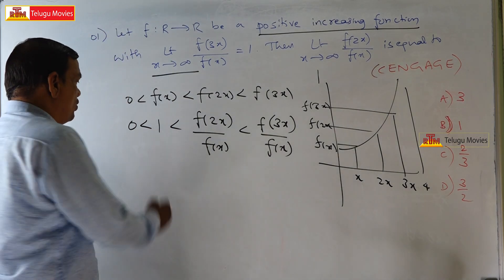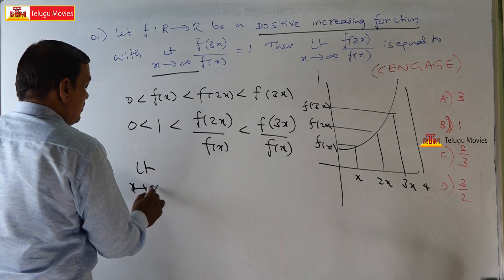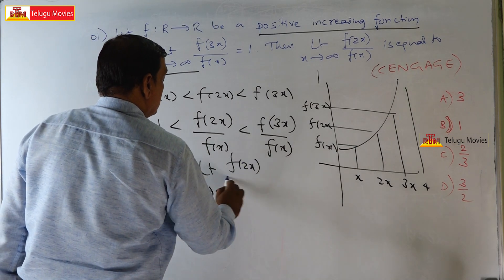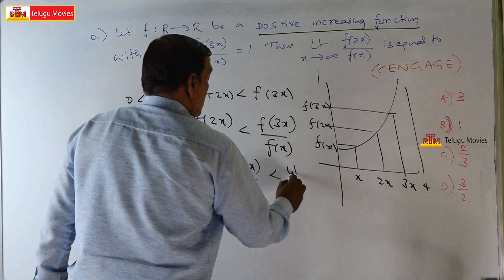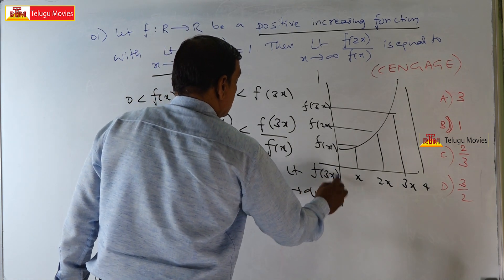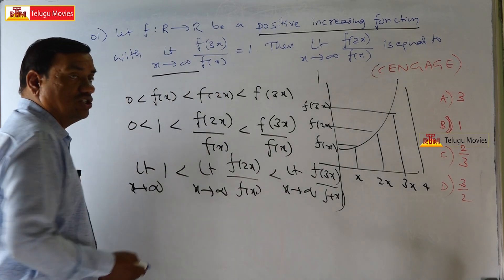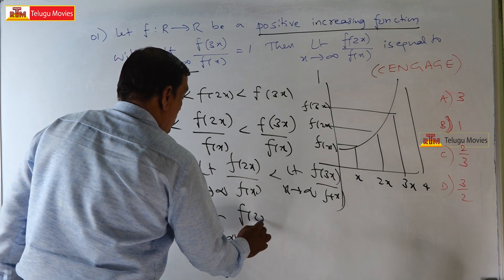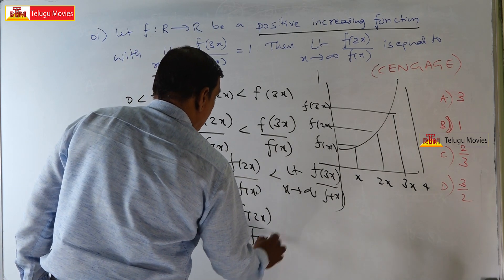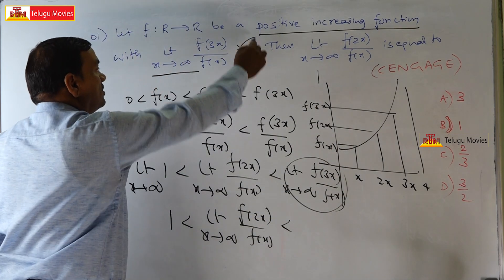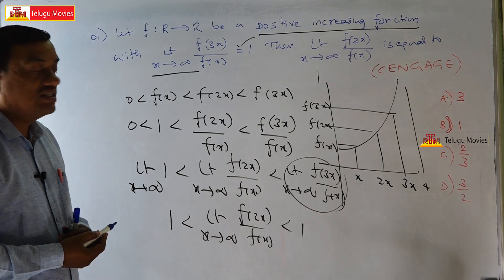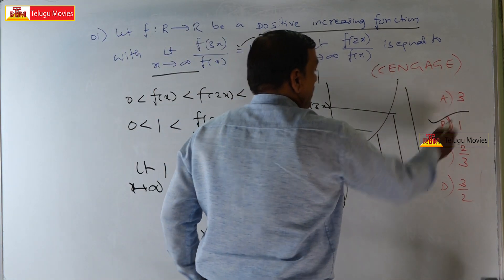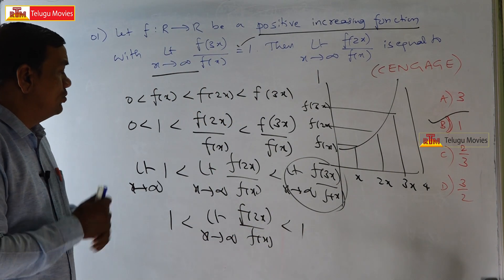Apply limit x tends to infinity. So: 1 ≤ limit x→∞ of f(2x)/f(x) ≤ limit x→∞ of f(3x)/f(x). This value is already given as 1. By the sandwich theorem, limit x→∞ of f(2x)/f(x) is also equal to 1. This is a very easy problem using the sandwich theorem.